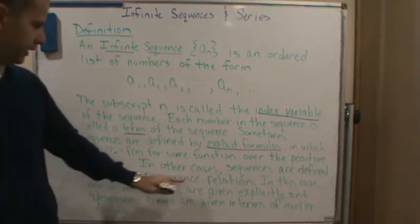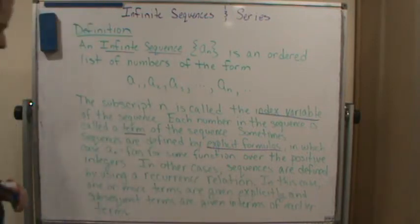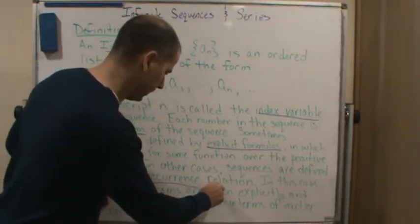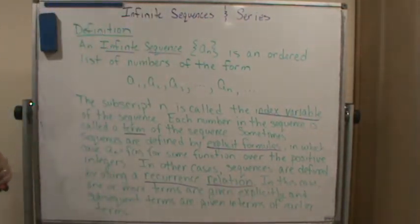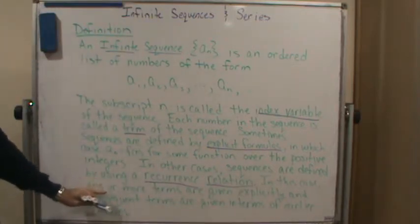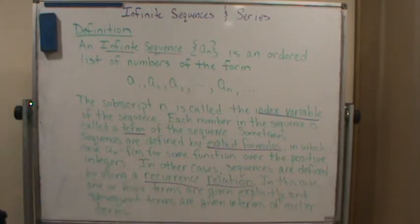In other cases, sequences are defined by using what's called a recursive, or a recurrence relation, or what we call being defined recursively. And in this case, what we have is we start with one or more terms that are given explicitly,